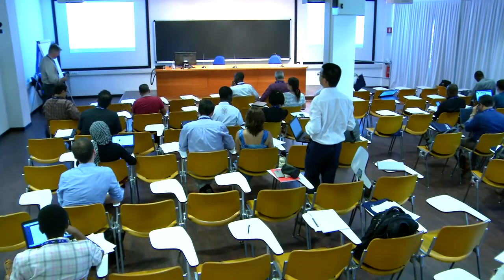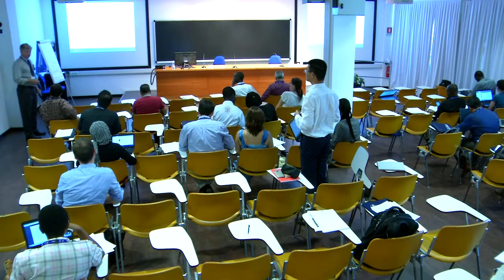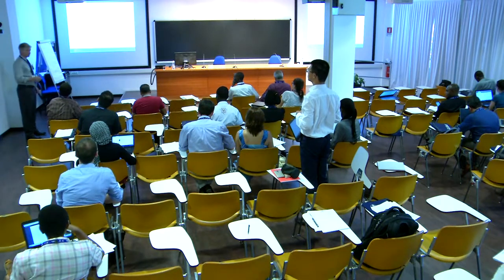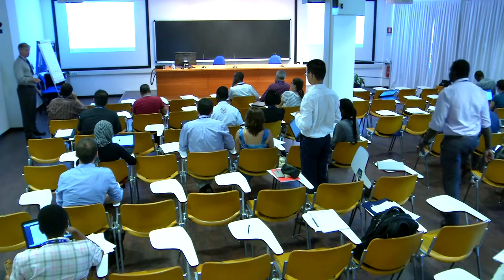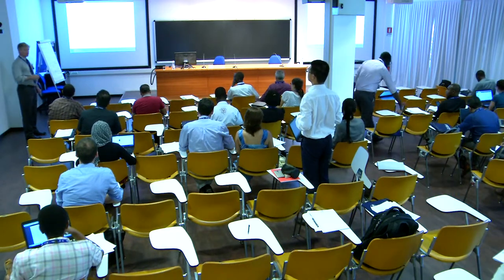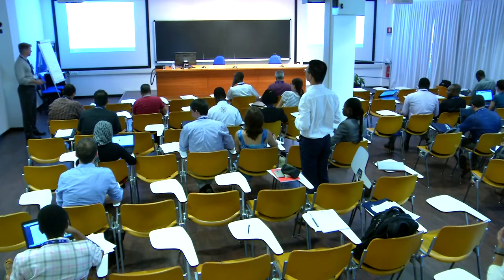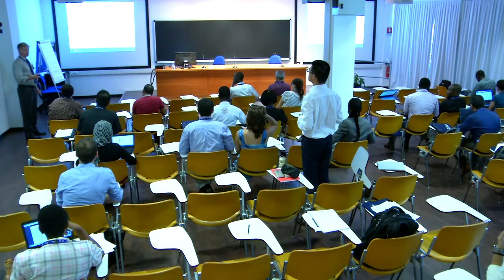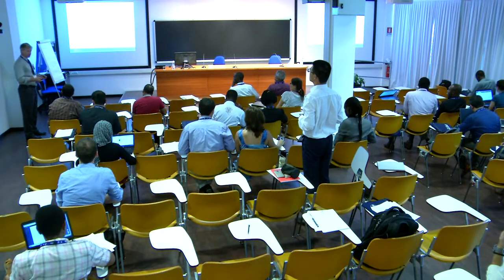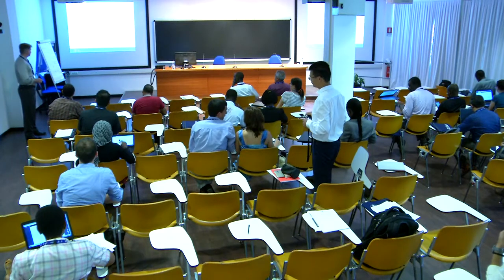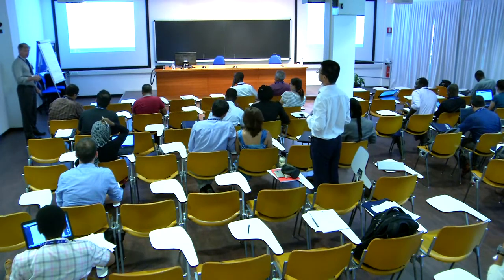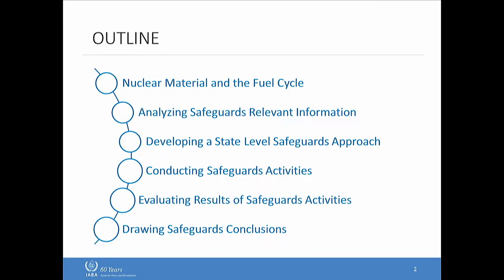What I'd like to talk about today is basically what constitutes nuclear material that's subject to safeguards. We'll go over the nuclear fuel cycle and how it pertains to safeguards, talk about safeguards relevant information, discuss what we call acquisition path analysis, how we identify technically plausible paths for acquiring weapons-usable nuclear material, and how we develop a state-level approach to cover those acquisition paths. Then we'll get into the types of activities the agency conducts and how we evaluate results and draw conclusions. Basically, information is coming into the IAEA safeguards department and conclusions come out — hopefully sound, credible conclusions.